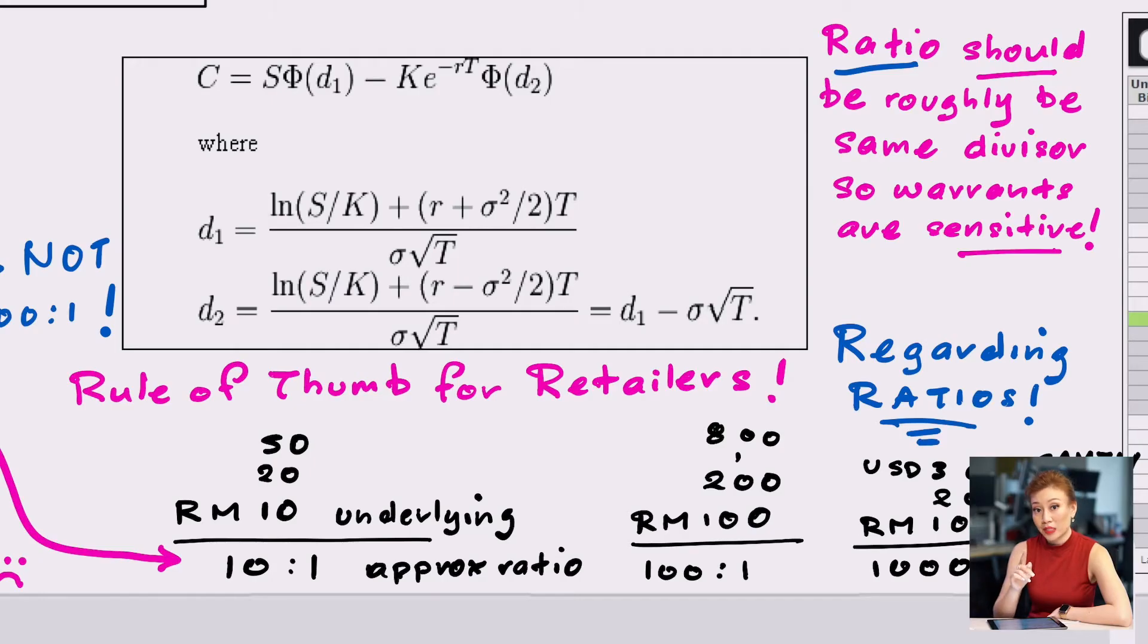I would say for issuers that issue a warrant with a ratio of 100 to 1 for an underlying that is 20 ringgit, just avoid. And especially if they don't offer a live matrix, just avoid that warrant. I've got a few people coming crying to me. Call up the issuer that does that, make some noise, give them a hard time. But I'm telling you right now, if it has exercise ratio of 100 to 1, avoid it if it's for equity.